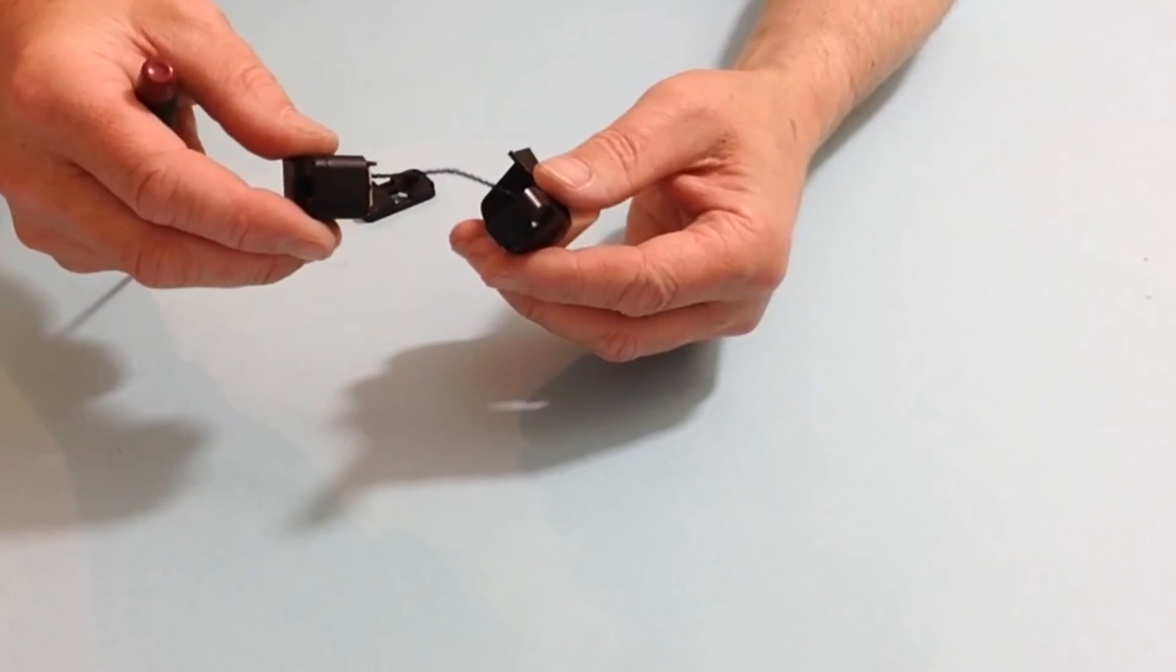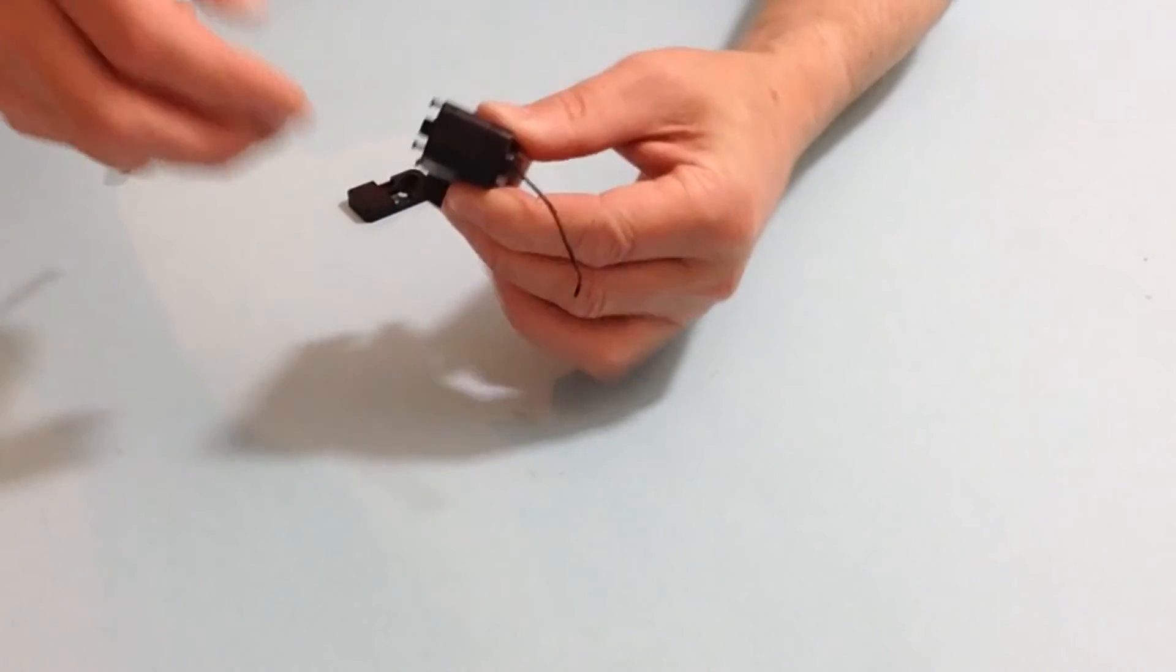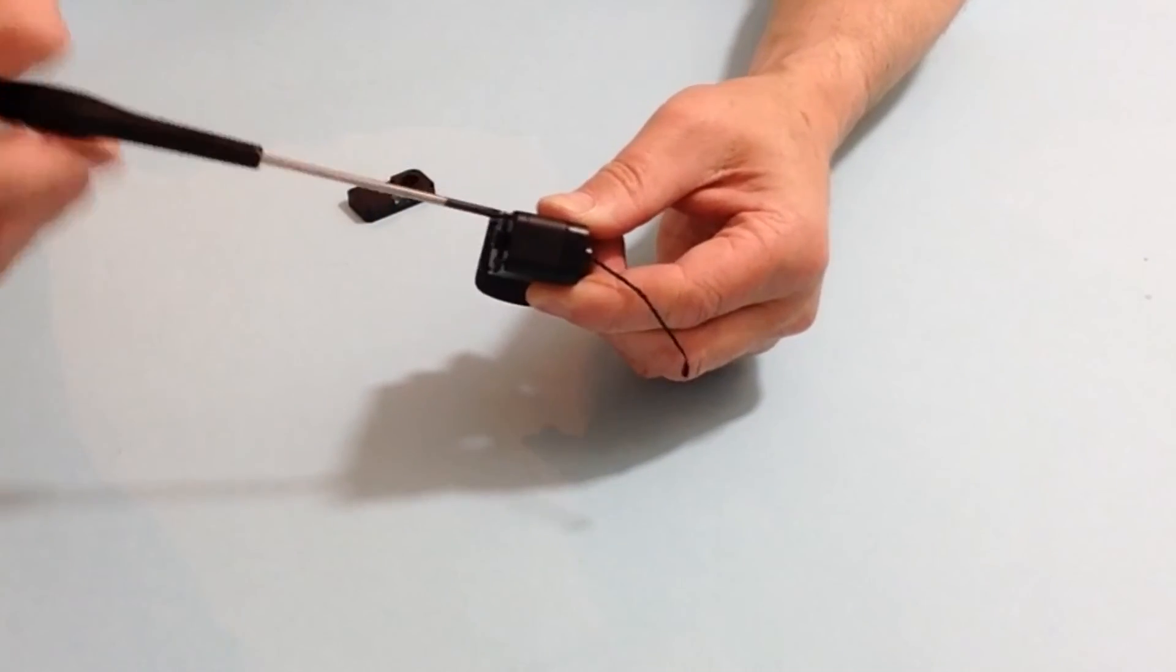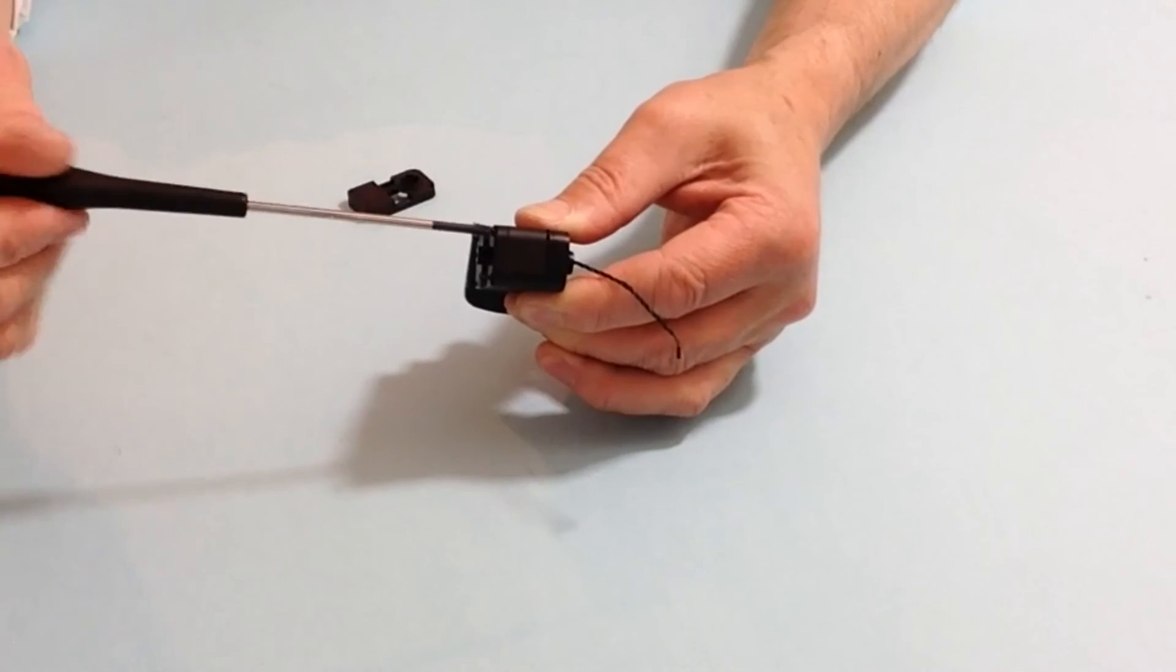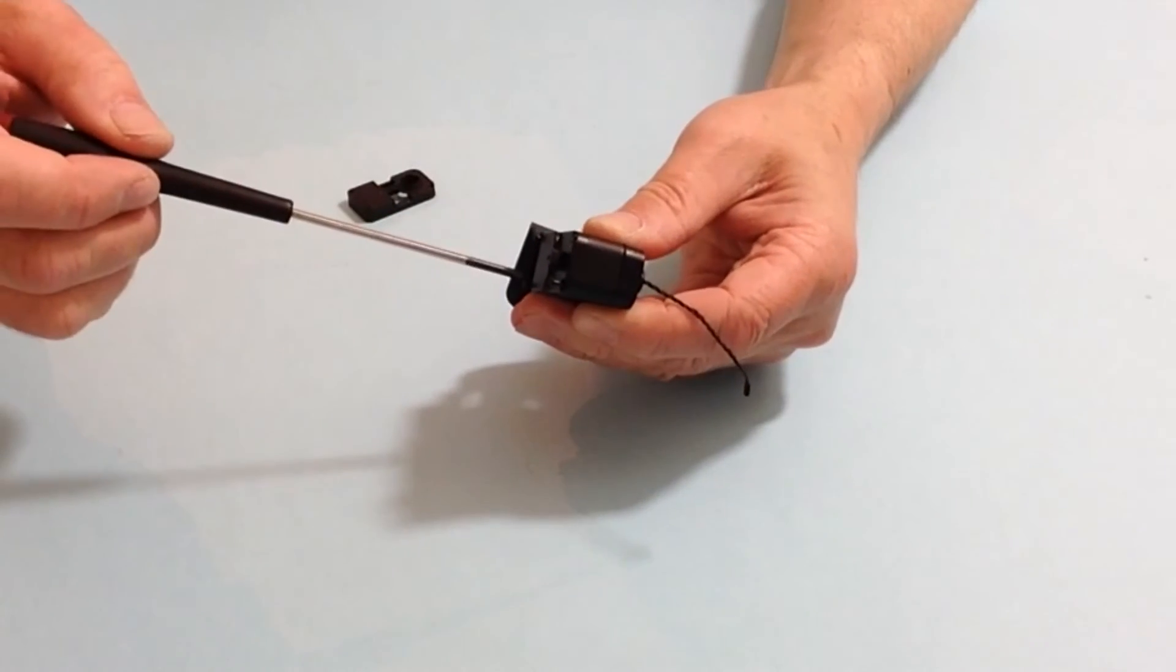Once again, slide the cable through the servo mount, and then once you've done that, tighten up the four screws into position. Like so.